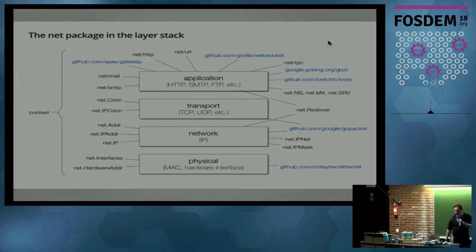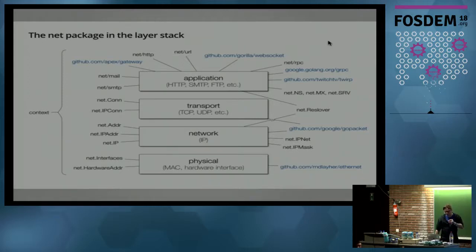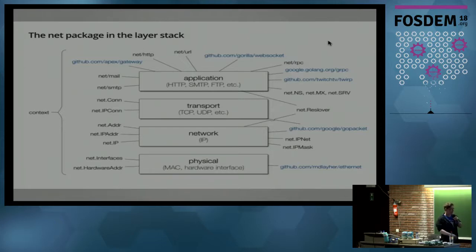I'm not going to explain what these layers are — just one anecdotal thing: I think it was Vint Cerf who said 'we won because we focused on the implementation, not the documentation, otherwise we'd be looking at the OSI seven layers.' On the physical layer there's obviously net interface and hardware address. There's also this package — it's pretty kick-ass — it essentially allows you to dig into Ethernet packets, so if you're doing IoT or low-level work, have a look at that networking layer.